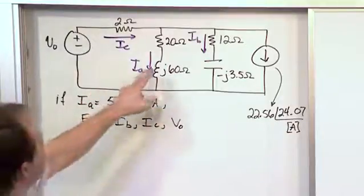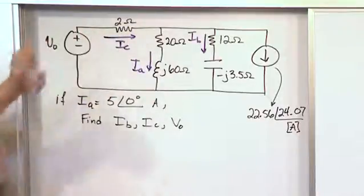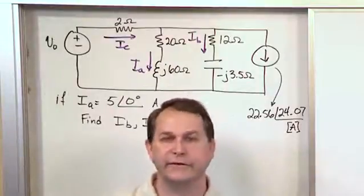We want to know what is this current through here? What is this current through this resistor? And what is the voltage source? And we're not asked to find the time domain answers. We're asked to just find the phasor answers.